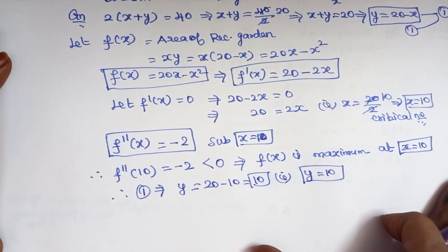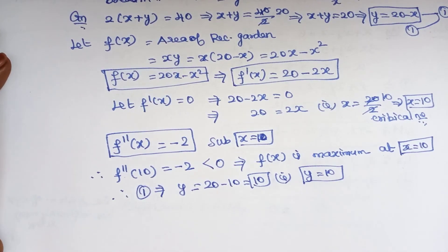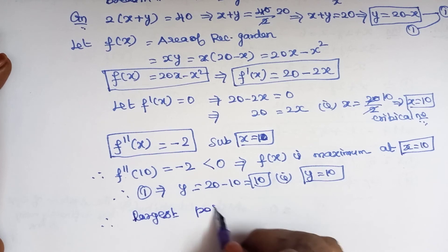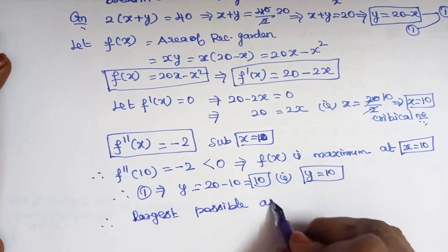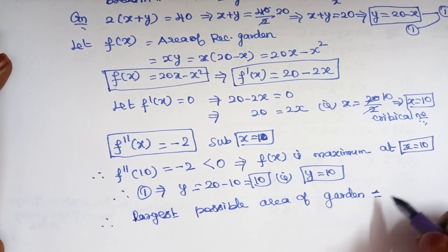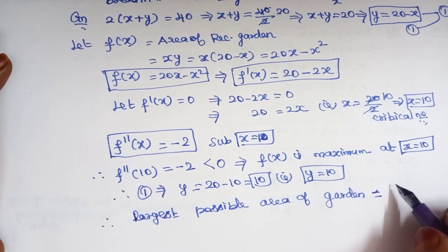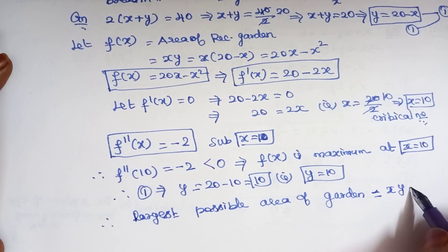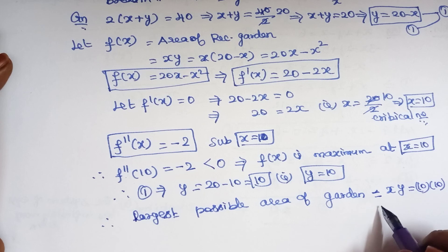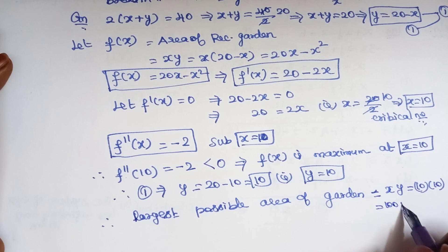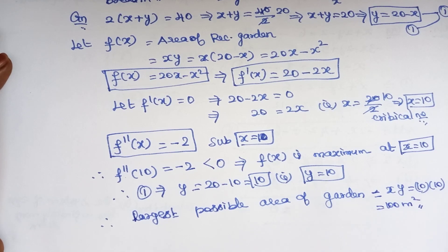Therefore the largest possible area of the garden equals length times breadth, which is x into y equal to 10 into 10, giving the maximum area equal to 100 meter square.